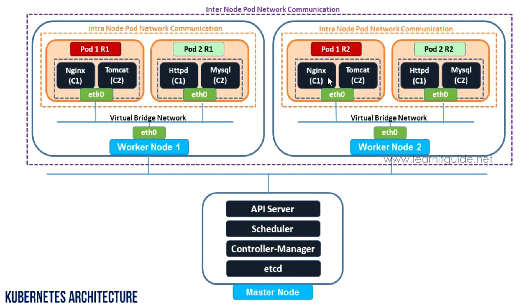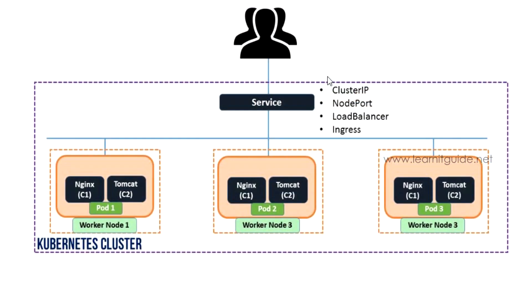The next type is service communication. A service acts like a load balancer or proxy to forward traffic requests to the target pods. This can be achieved using four different types: ClusterIP, NodePort, LoadBalancer, and Ingress. Each type has its own function and purpose.